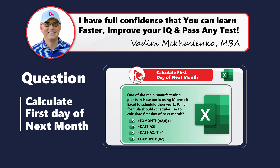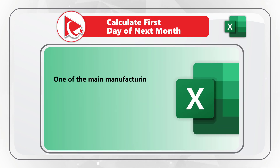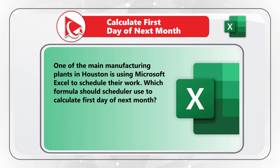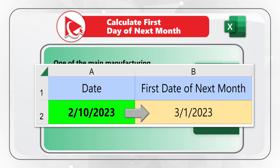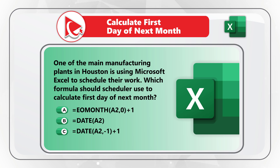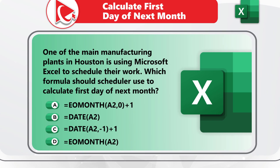Here's a very interesting Excel test question where you need to calculate the first day of the next month. One of the manufacturing plants in Houston is using Microsoft Excel to schedule their work. Which formula should the scheduler use to calculate the first day of next month? Today's date is February 10th, 2023. You have four different choices: choice A — EOMONTH with parameters A2 comma 0 plus 1, choice B — using a DATE formula, choice C — using a DATE formula with different arguments, and choice D — EOMONTH with argument A2.